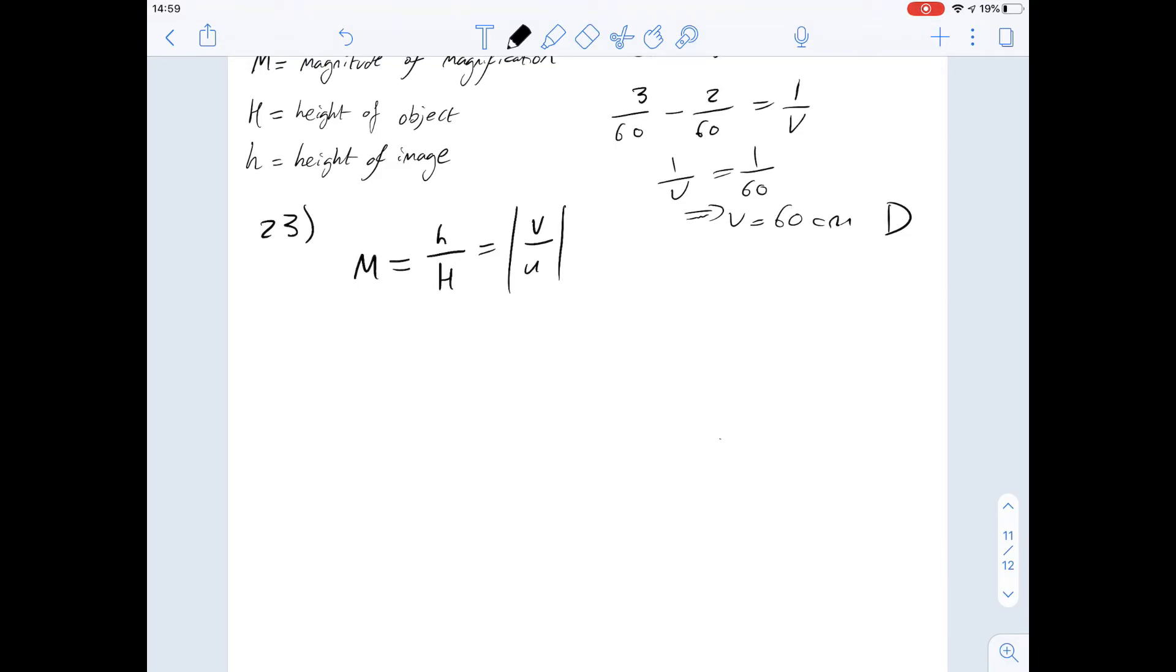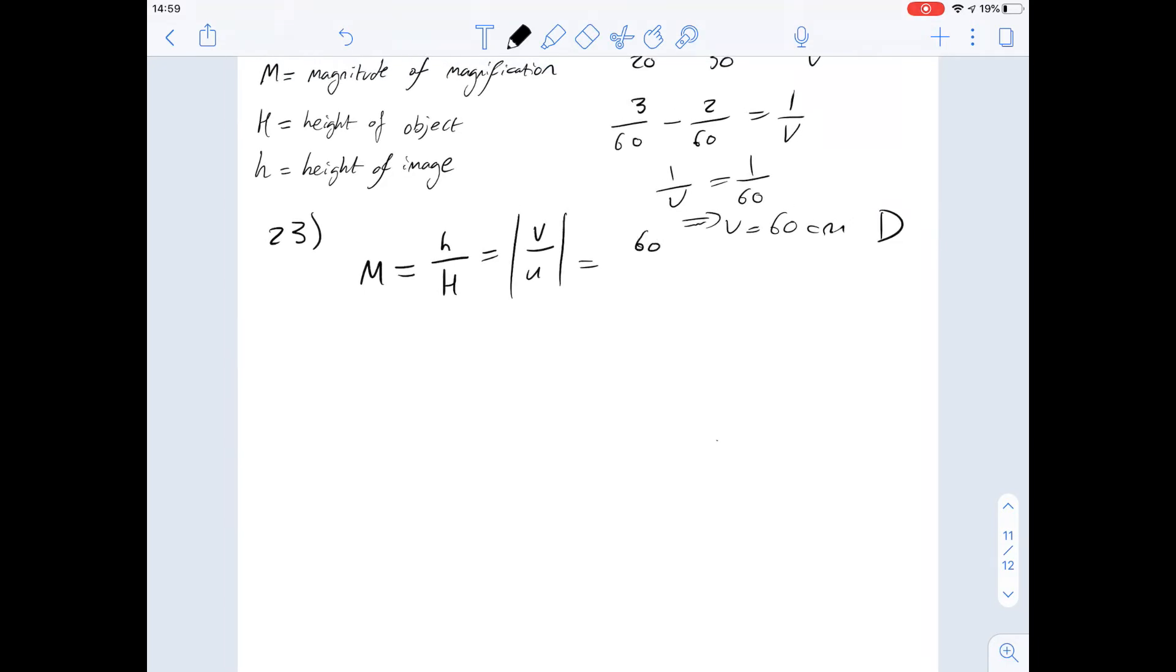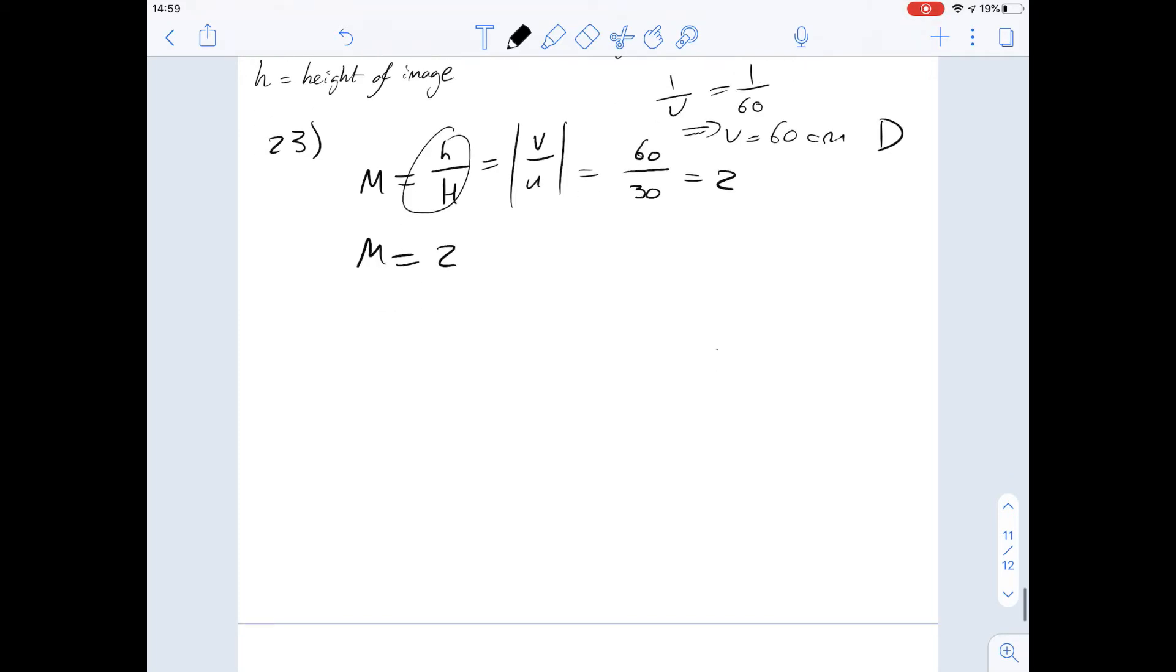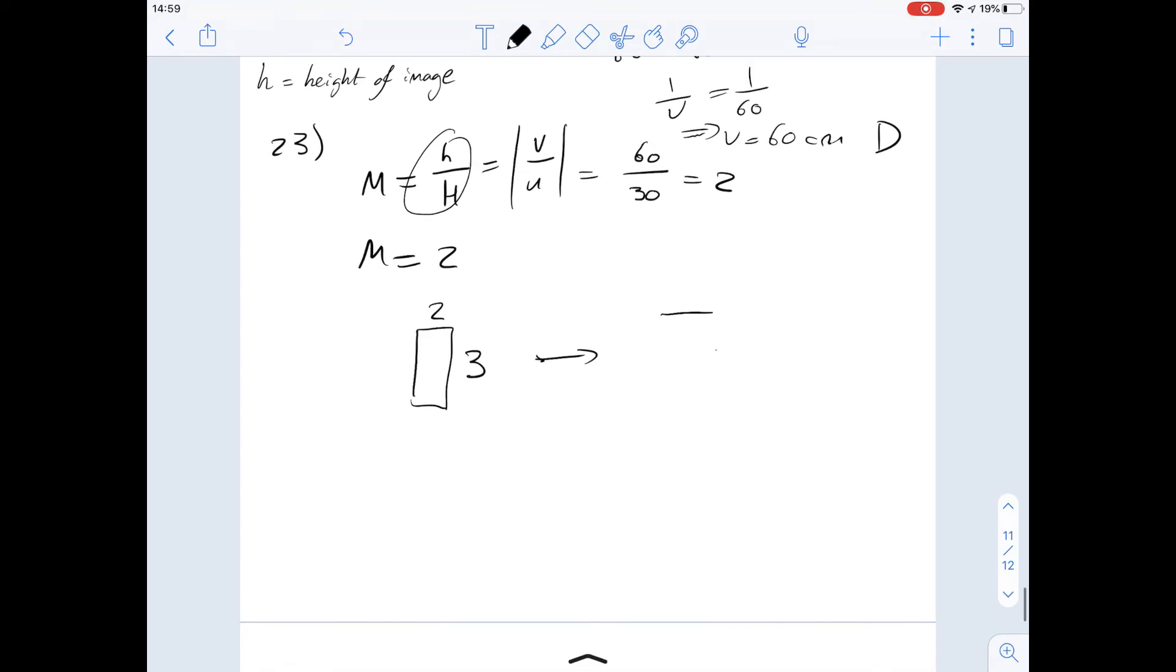We know V and U. So V is going to be 60 and U is 30, which gives us a value of M of 2. If M equals 2, we're also told this is going to be the ratio of the heights, which is true also for a converging lens for the widths. We know that the original dimensions is 2 by 3, so we multiply this by 2. We end up with an image that is 4 by 6, which gives us an answer for number 23 of C.